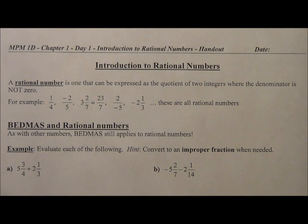Hi. Here's a lesson on Introduction to Rational Numbers. A rational number is one that can be expressed as the quotient of two integers where the denominator is not zero.